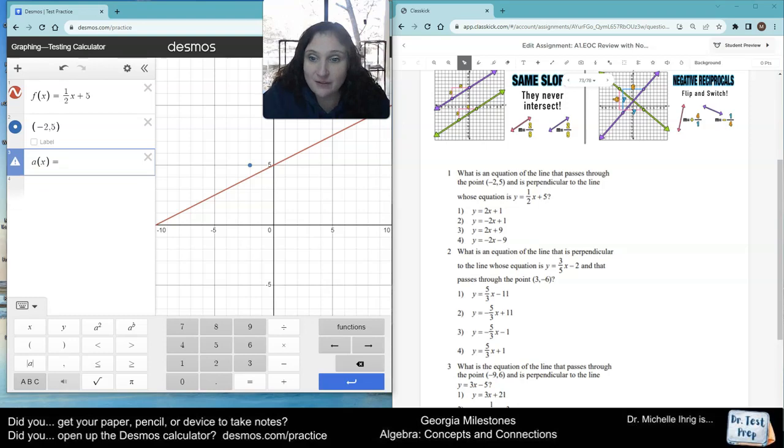So, let's do a of x, the first choice, because I can't write the number one. Y equals two x plus one. Well, I wrote y equals, didn't I? Let's take that out. Y equals two x plus one. Well, that doesn't make a right angle, and it doesn't touch the blue dot, so it can't be choice one.